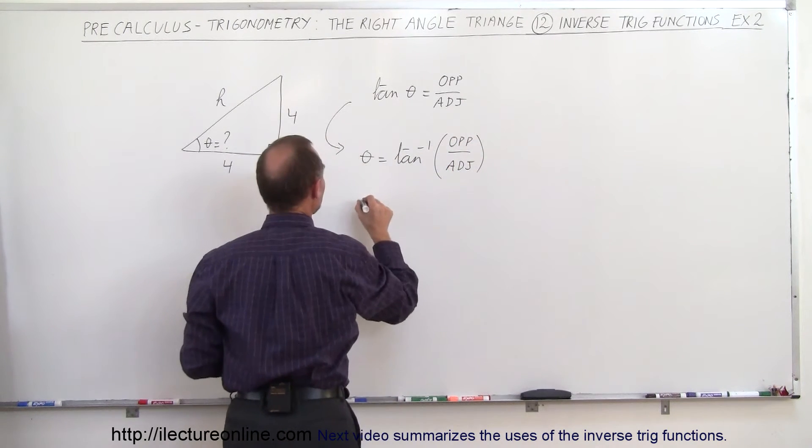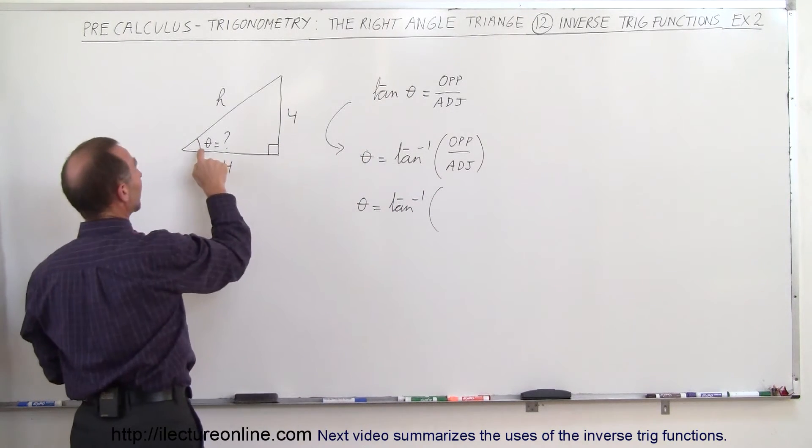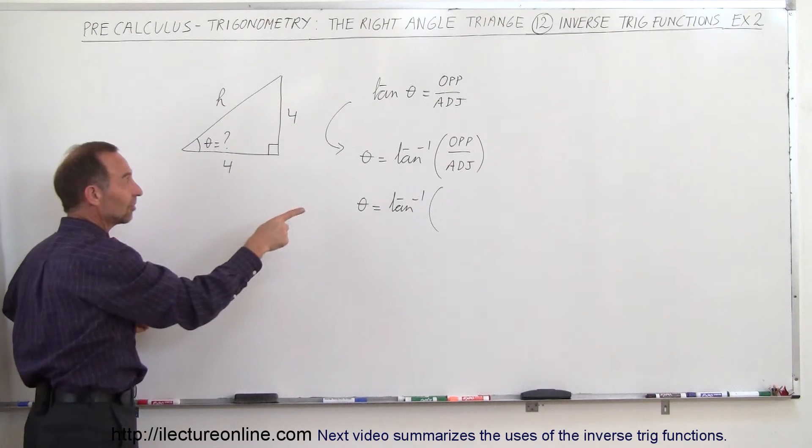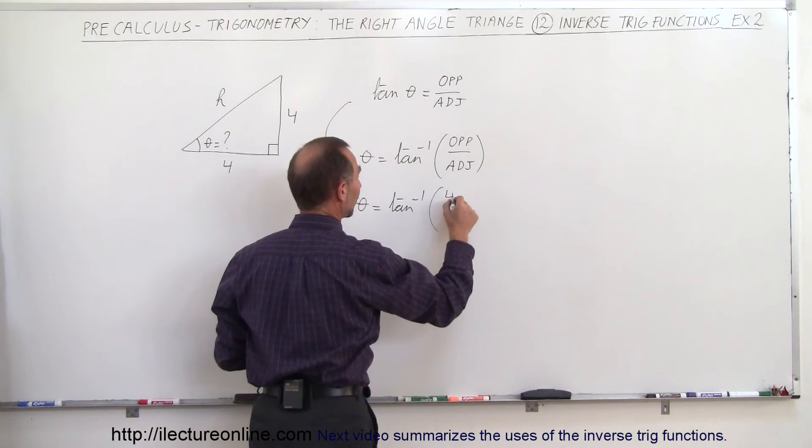So now when you plug in the numbers, you get the angle theta is equal to the arctangent of, so the opposite side to the angle right here is 4, the adjacent side of the angle here is 4. Wow, they're both the same, so 4 divided by 4.